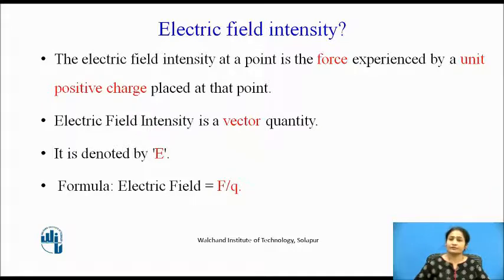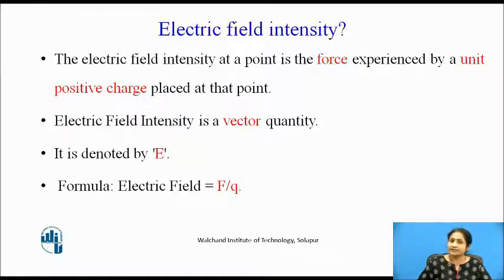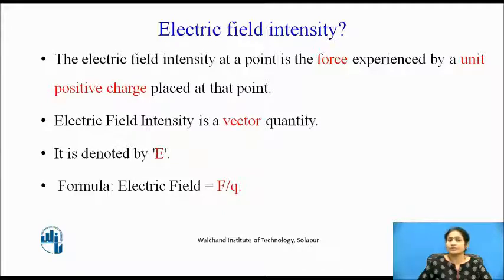As we are familiar with electric fields, electric fields are nothing but imaginary lines which we feel or experience. The electric field intensity at a point is defined as the force experienced by the point charge placed at that point. This electric field intensity is a vector quantity and it is denoted by E. The formula for electric field is given by force per unit charge, that is F divided by Q.